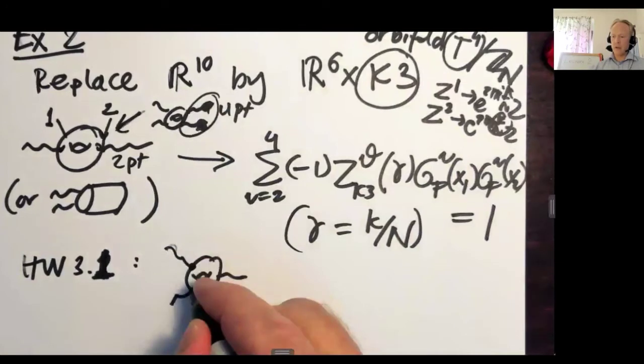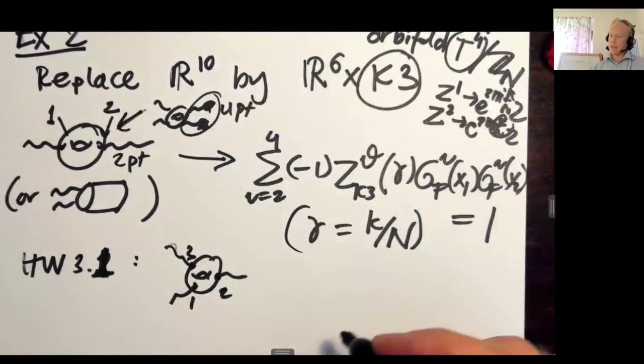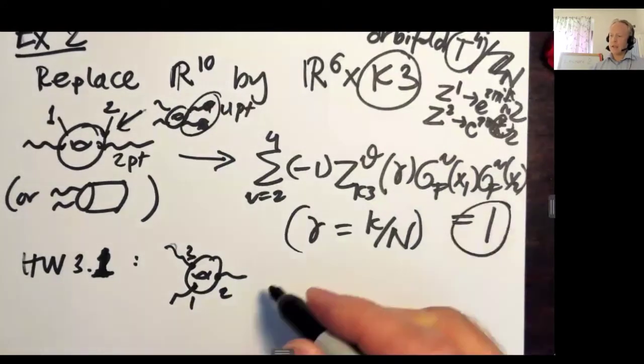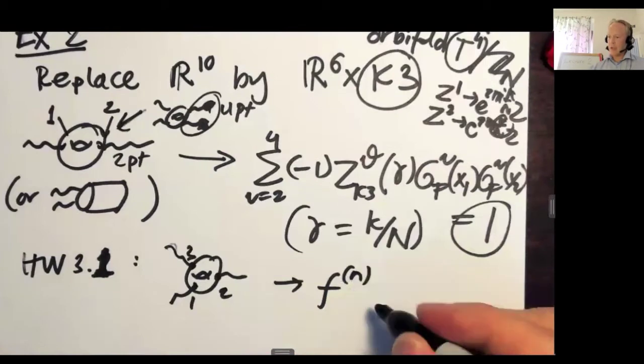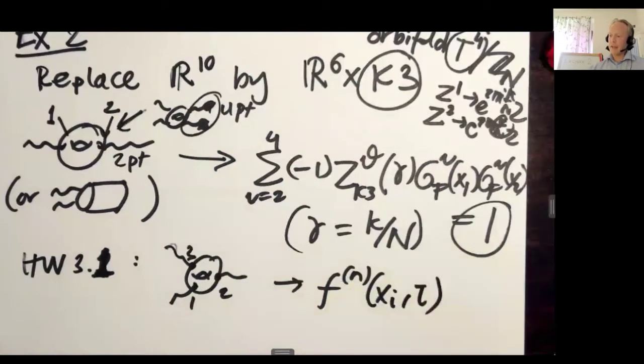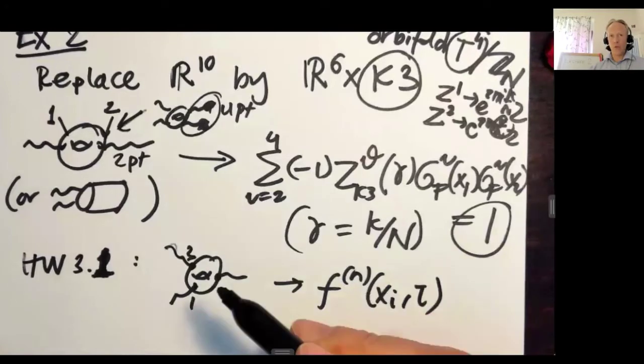They have this point, this point, and that point. So you have one, two, three marked points. Now, the analogous thing that replaces 1 is something that in the notes and in the papers I linked to on the web page, we call fn of xi and tau. And the fn is an infinite sequence of objects that appear. And here, only f1 appears.